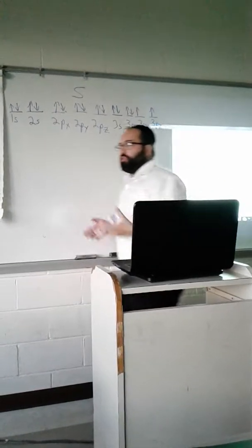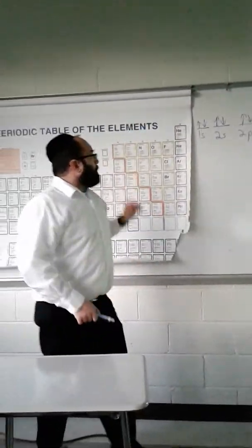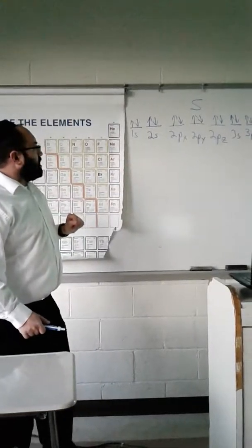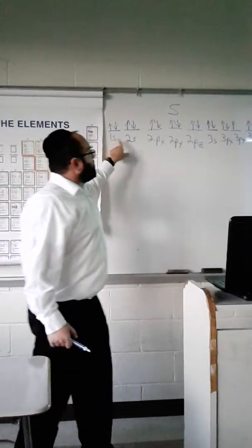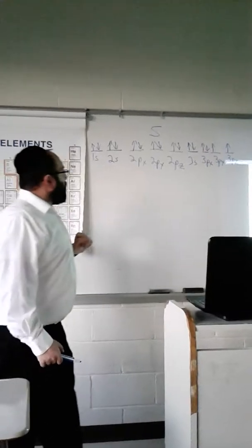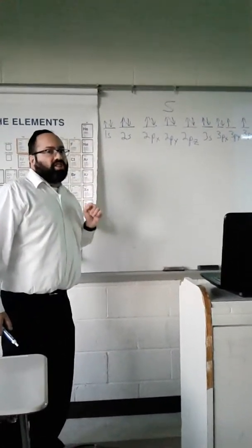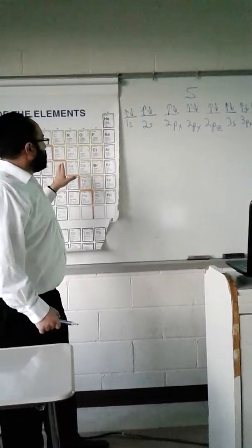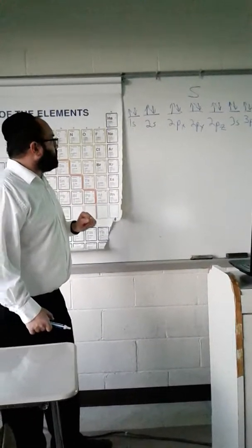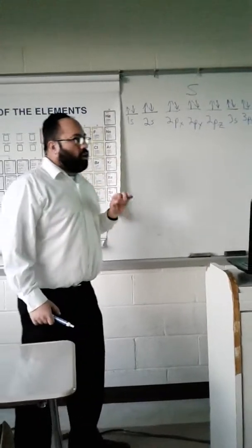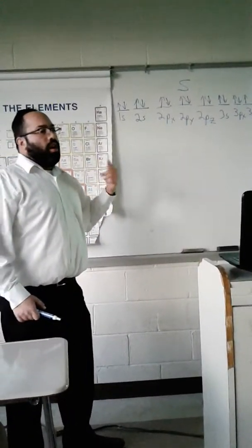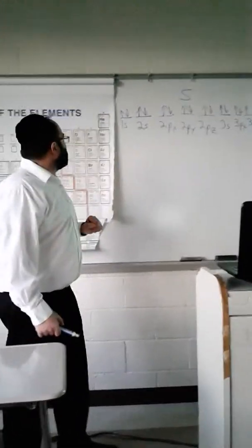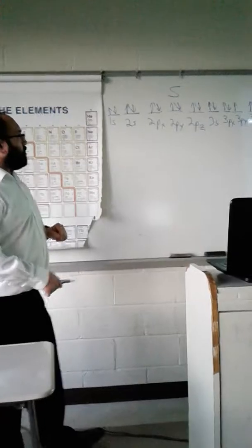Showing my principal quantum number, which are these 1, 2s, and 3s. My angular momentum, which is s, p type. We could have a d or an f angular momentum. But in the second and third period, we don't have d's and f's. And then we have the magnetic quantum number, which shows us the orientation in three-dimensional space, which is my x, y, and z. And my spin is being indicated by an up and down arrow.